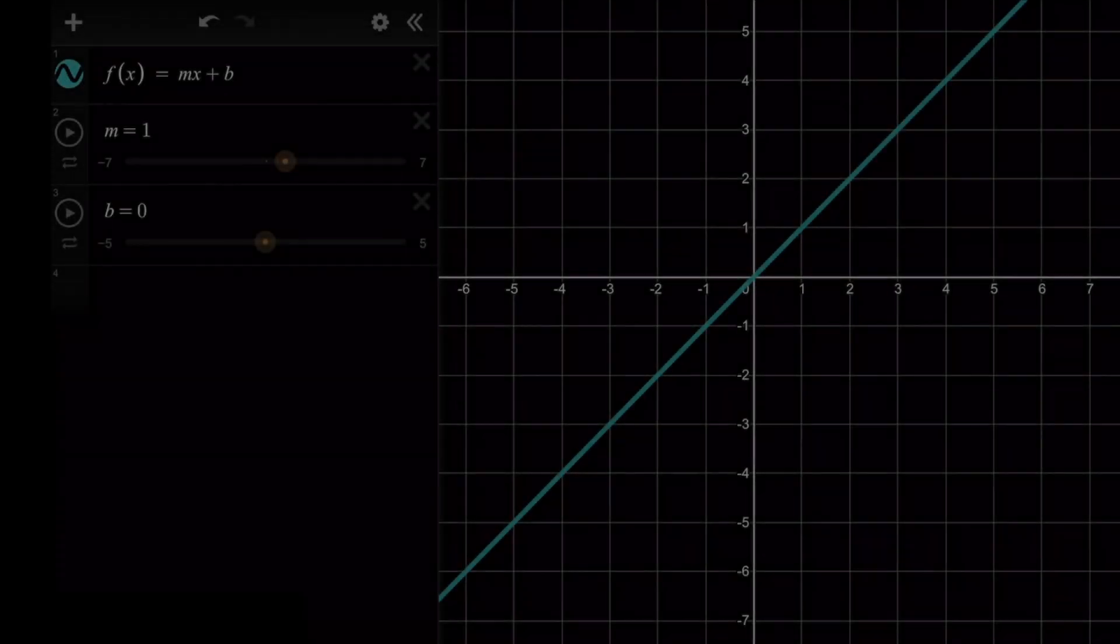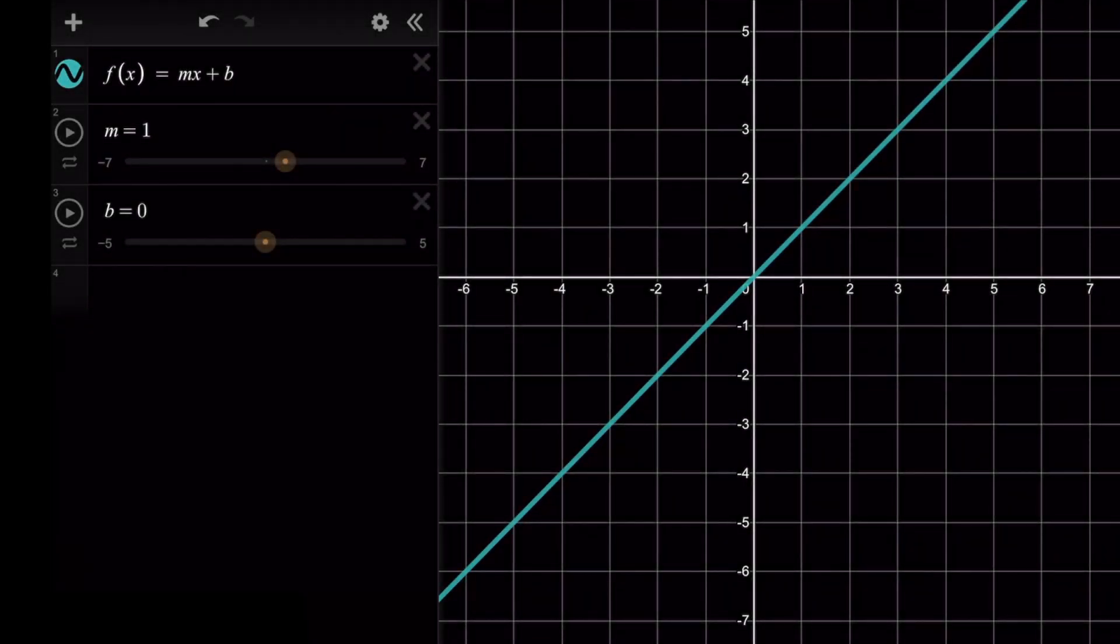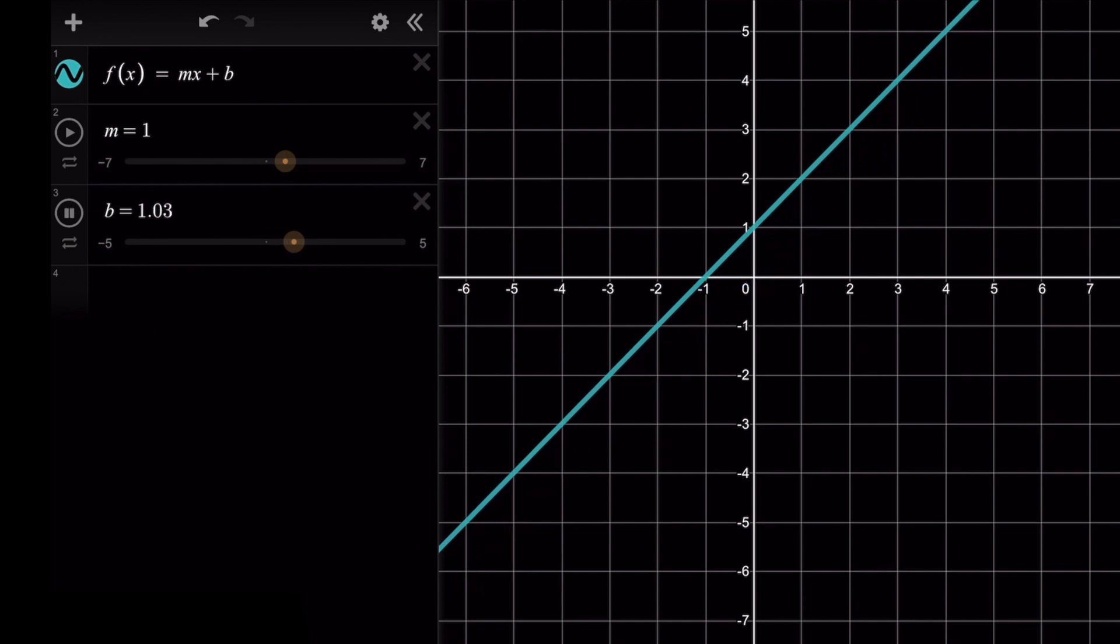So we looked at the m value and tried different slopes. Let's go back to our graph and try some different b values.